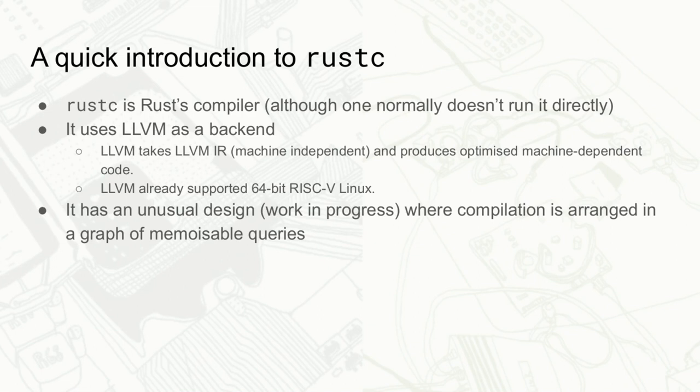The Rust compiler is rustc. Normally you'd use Cargo, which is sort of like make or npm but for Rust — it can build your program, run unit tests, download dependencies, that sort of thing. Rustc uses LLVM as the compiler backend. LLVM is a modular compiler backend used by lots of compilers: Clang, GCC, Rust, and many others.